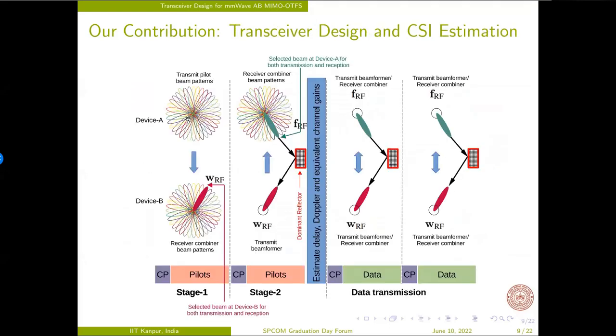Our design procedure is summarized in this slide. In stage 1, device A transmits probing beams, and device B selects the beam WRF from its codebook, which is maximally correlated with the probing outputs. In stage 2, device B transmit pilot symbols on this selected beam WRF, and device A selects the beam FRF from its codebook, which is maximally correlated with the pilot output. The stage 2 pilot outputs corresponding to the selected beam FRF and WRF are also employed for learning the delay Doppler and equivalent gain of the multipath components.